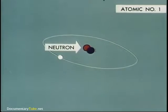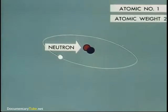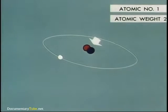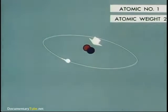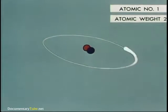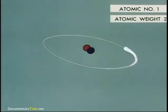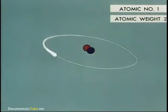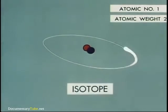It gives this form of hydrogen an atomic weight of two, the sum of the protons and neutrons in the nucleus. Different forms of the same element, with different weights but carrying the same electrical charges and having identical chemical behavior, are known as isotopes.